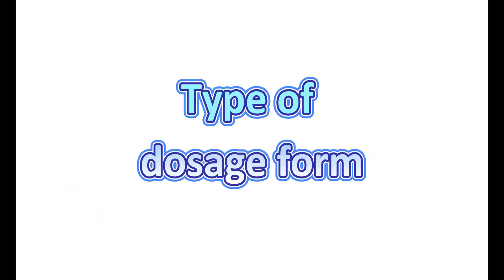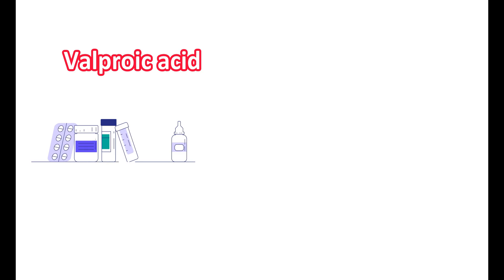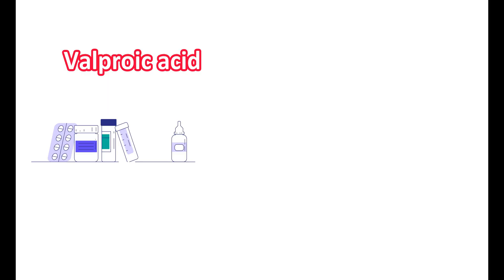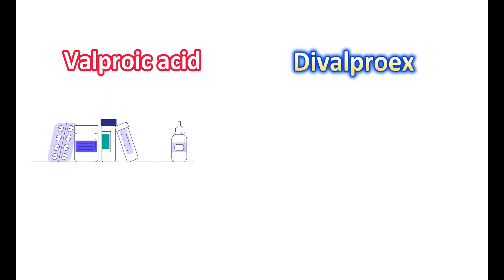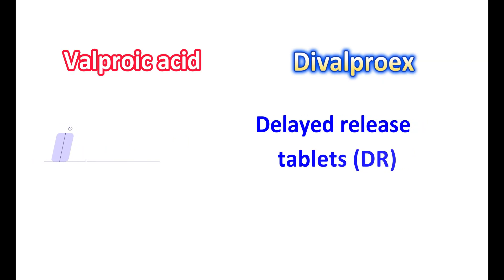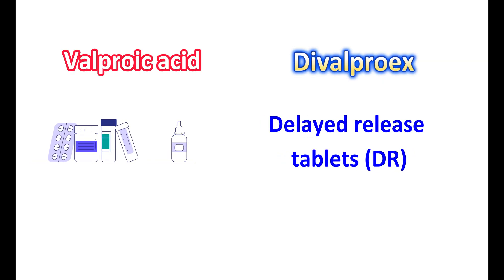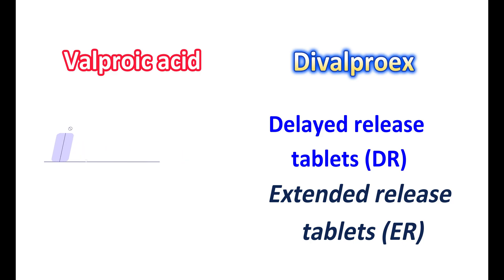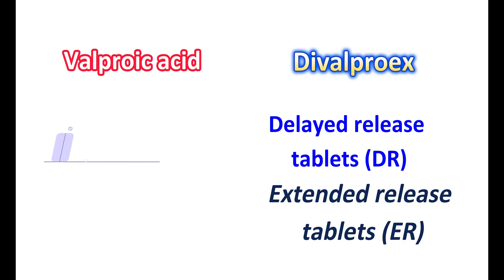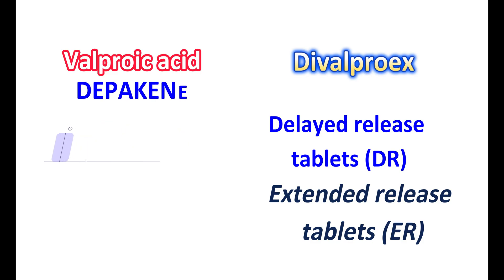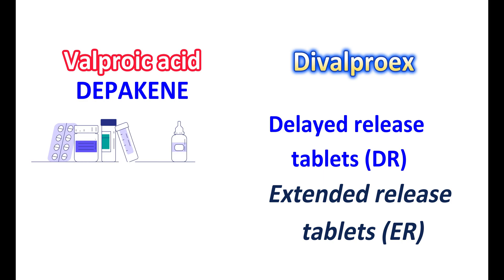Type of dosage form: Valproic acid is available as oral solution, capsules, as well as injectable solution, making it preferred in hospital settings where it can be given by injection. On the other hand, divalproex sodium is available as delayed-release tablets or extended-release tablets, which contain both valproic acid and sodium valproate in a 1:1 ratio. Valproic acid is well known by its brand name Depakine, and divalproex as Depakote.